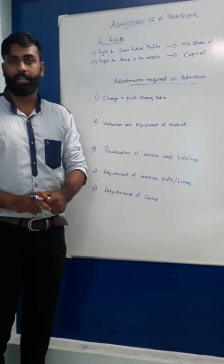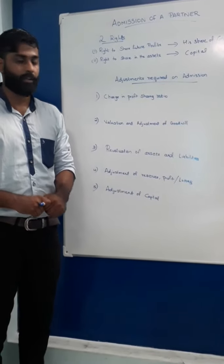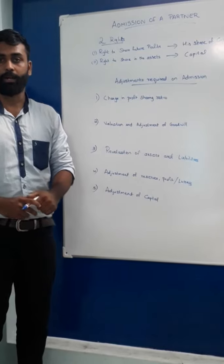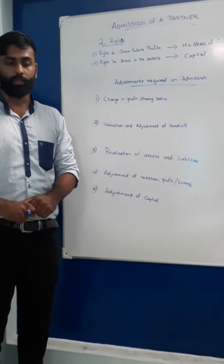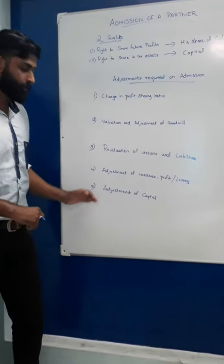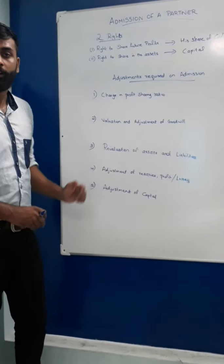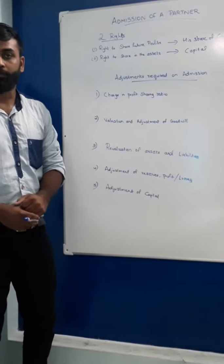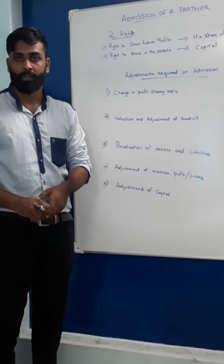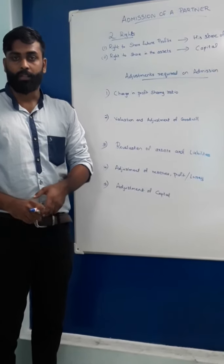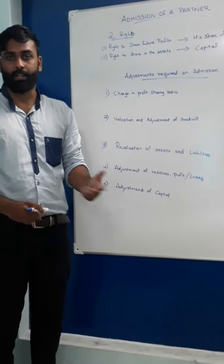In this chapter, we will study what adjustments have to be made when a new partner is admitted into the business. There are 5 adjustments. Among these, 4 adjustments we have already studied in our previous chapter on changing profit sharing ratio. There is only one last adjustment we will study in this chapter.